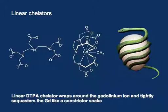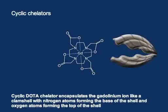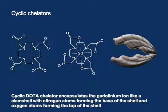That's a very effective strategy and you get very high stability constants. The other way is to make a clamshell structure — we call this a macrocyclic structure because the ring is closed. We've got a cycle, and the gadolinium can sit inside like the pearl inside an oyster, with the oxygens coming down on top and clamping down. This is the second class of compounds.